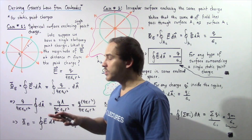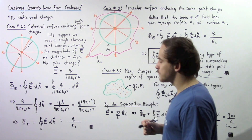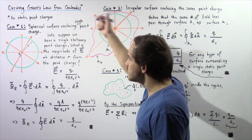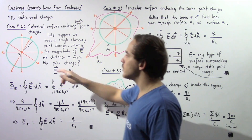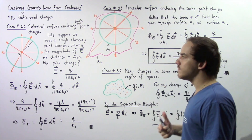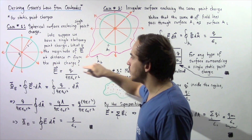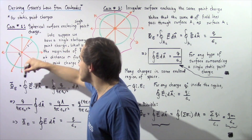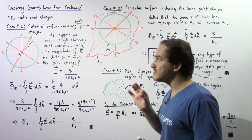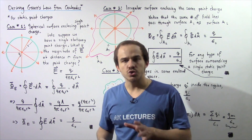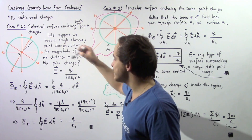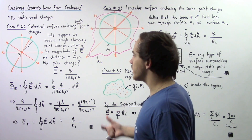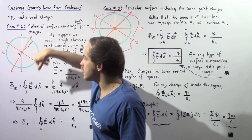Let's begin with case number one, which is the most simple case. Case number one deals with a spherical surface enclosing a single point charge. Suppose we have a single stationary point charge Q. The magnitude of the electric field at a distance R from the point charge — on the green outlined spherical surface — is given by Coulomb's law: E equals Q divided by 4π ε₀ R², where R is the radius of our sphere.